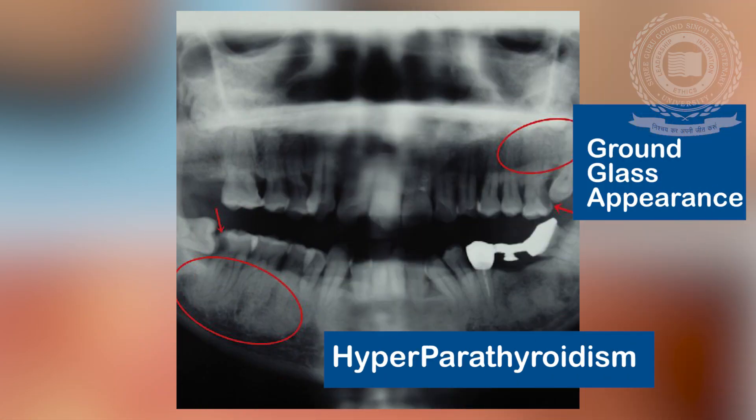Hyperparathyroidism is characterized by hypersecretion of the parathyroid hormone. The loss of lamina dura is the most significant finding in patients with hyperparathyroidism. There is also an altered trabecular pattern with the appearance of ground glass. Central or peripheral giant cell tumors may also develop.